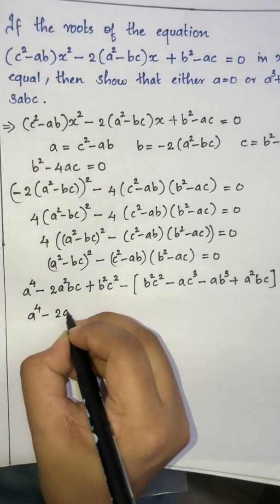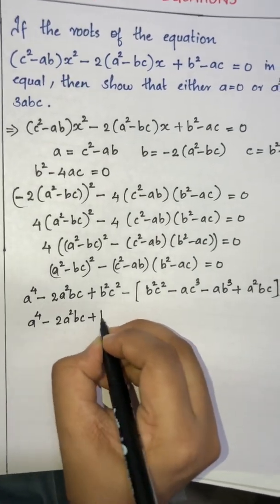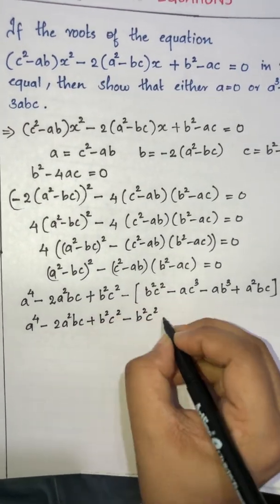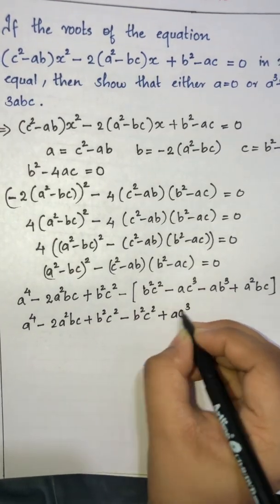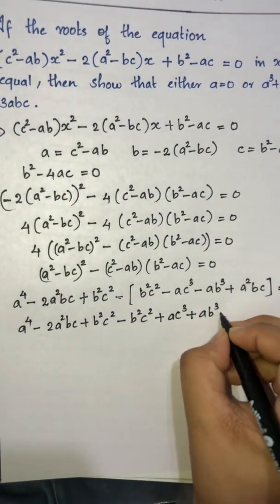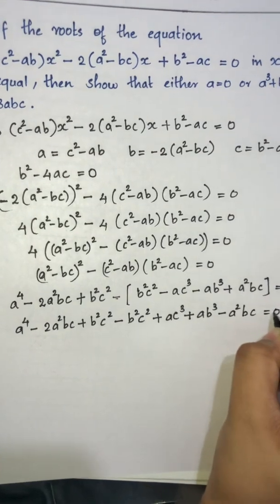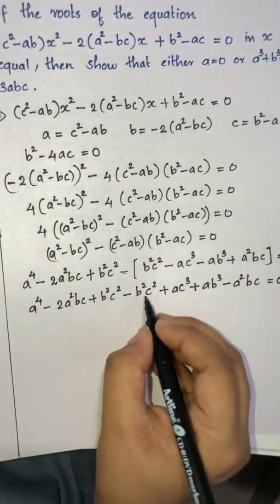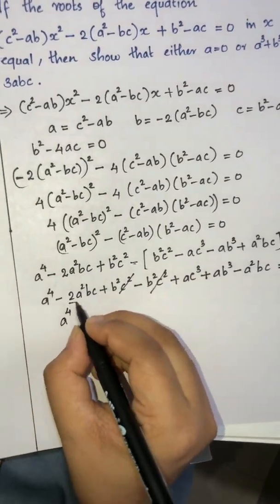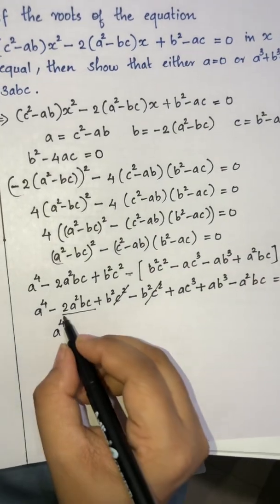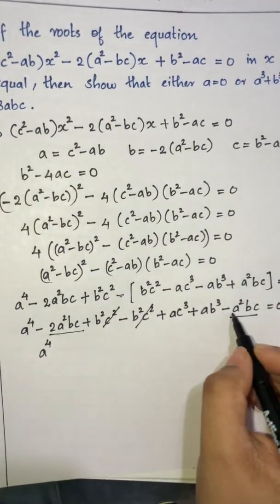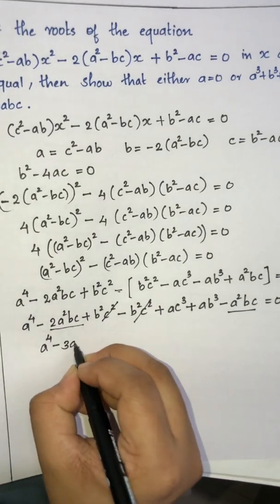Collecting all terms: a⁴ - 2a²bc + b²c² - b²c² + ac³ + ab³ - a²bc = 0. The b²c² terms cancel. Combining the a²bc terms: -2a²bc - a²bc = -3a²bc. So: a⁴ - 3a²bc + ac³ + ab³ = 0.